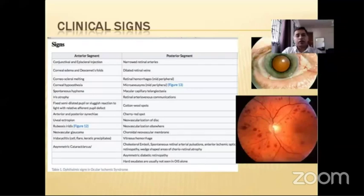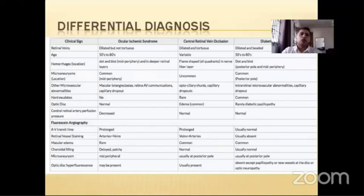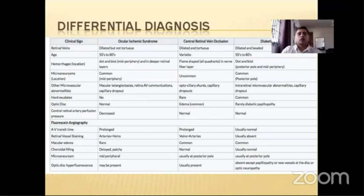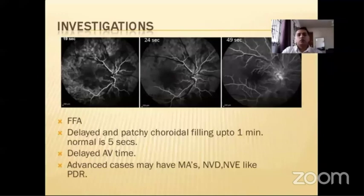Neovascular glaucoma, iridocyclitis with cells and flare, and keratic precipitates may be present. Asymmetric cataract with the affected eye having more severe cataract is characteristic. Fundus findings include multiple peripheral and mid-peripheral dot and blot hemorrhages, dilated veins with narrowed arteries, cotton wool spots, cherry red spot, AV communications, frank vitreous hemorrhage, multiple peripheral neovascularization and NVD. Hard exudates are rarely seen unless co-existent diabetic retinopathy is present.